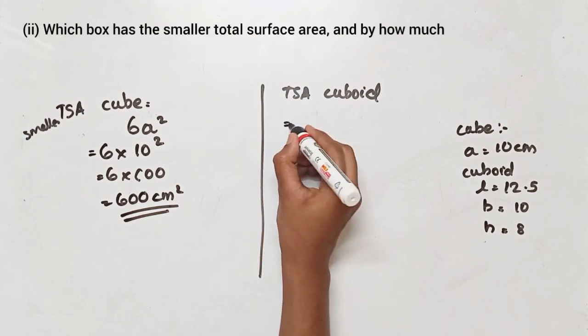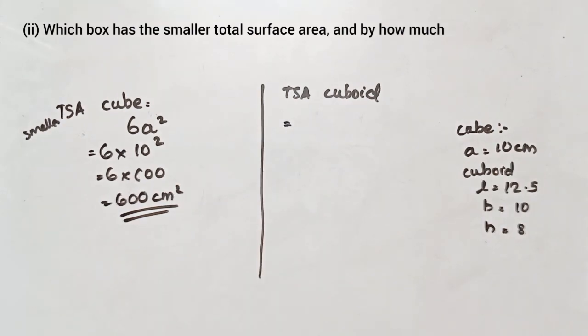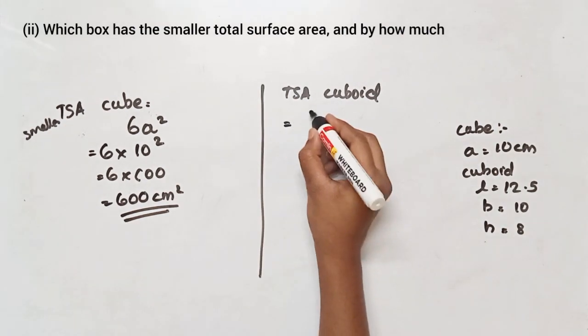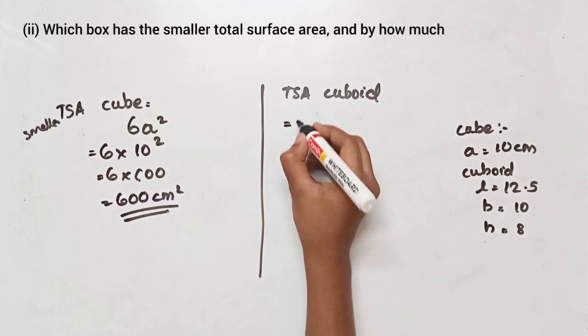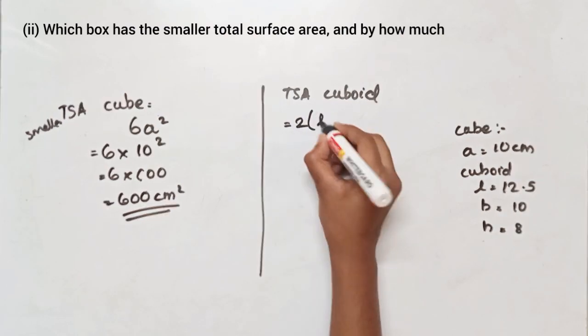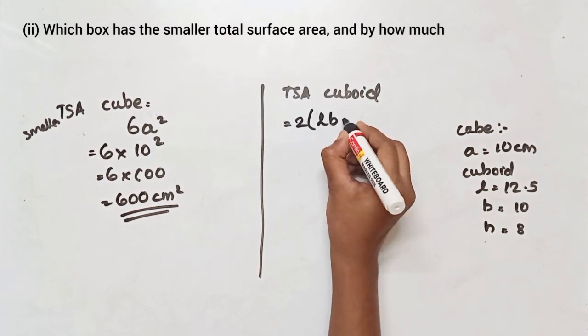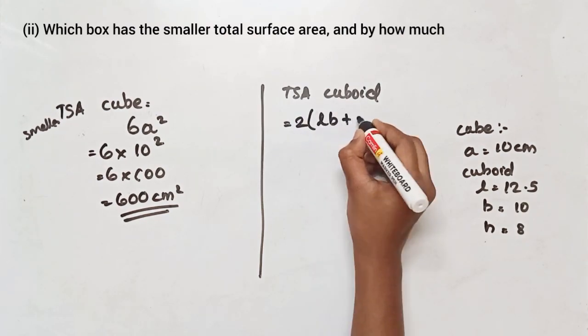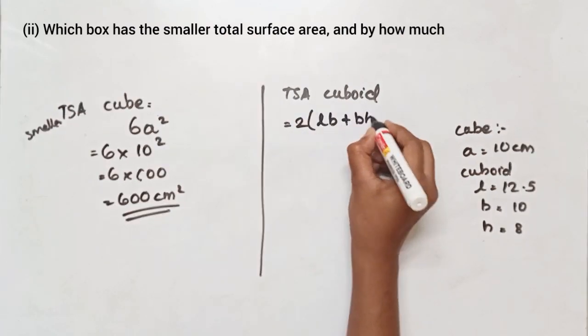Now we find the total surface area of the cuboid. The formula to find the total surface area of a cuboid is 2 into (lb + bh + lh).